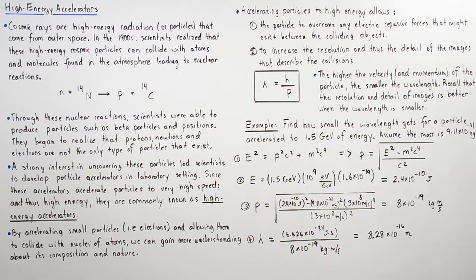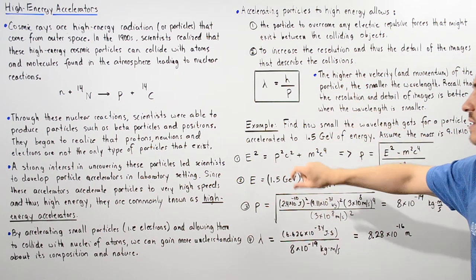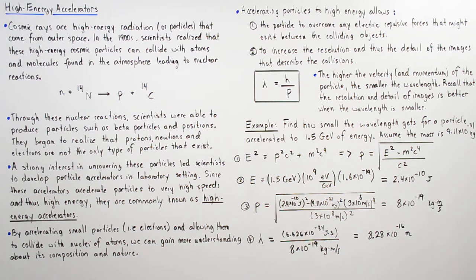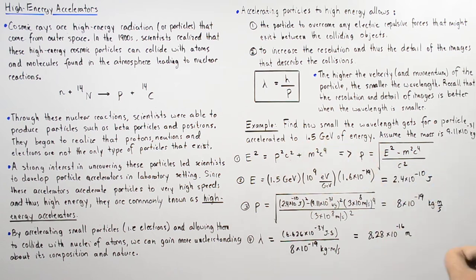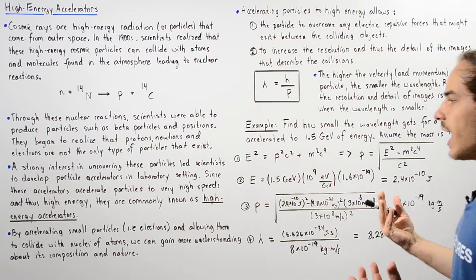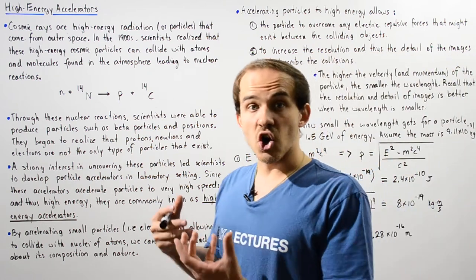To see exactly what we mean by this statement, let's look at the following example. Find exactly how small the wavelength gets for a particle that is accelerated from rest to an energy of 1.5 giga electron volts. Assume that the mass is that of our electron. Because the velocity is so high,